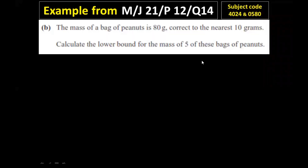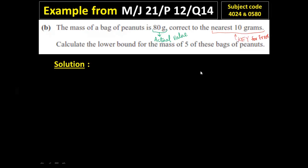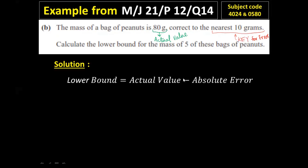Now part B. The mass of a bag of peanuts is 80 grams correct to the nearest 10 grams. Calculate the lower bound for the mass of five of these bags of peanuts. To calculate the lower bound, you should know the actual value and the key for error. The equation is: lower bound equals actual value minus absolute error.